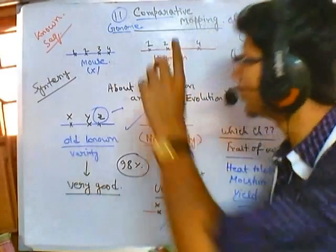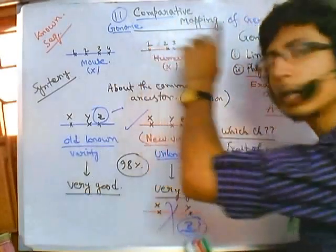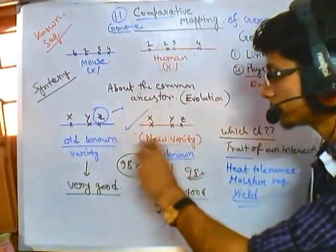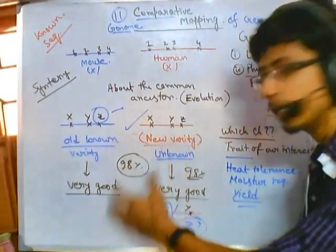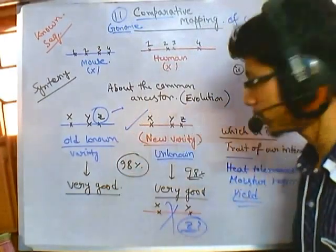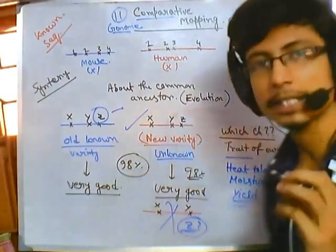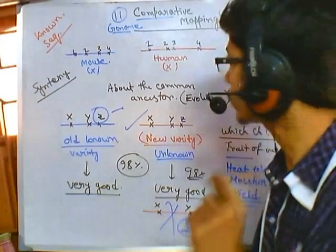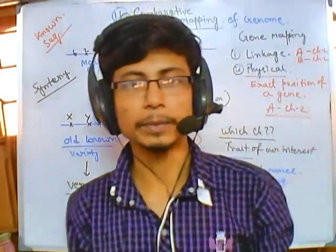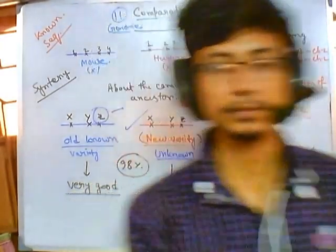Comparative gene mapping helps us understand synteny and evolutionary relationships, and also helps improve plant breeding technology. Those are the importance of comparative genome mapping.